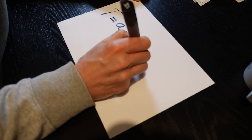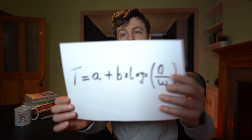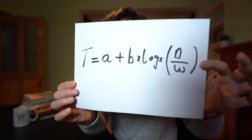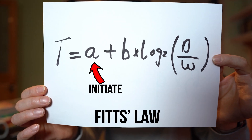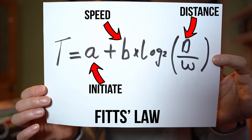Let me show you something. The time taken to point and click on a graphical user interface, or GUI, is given by this equation. This is known as Fitts' Law. A relates to the initiation of the movement, B to the speed of the movement, and D is the distance moved.